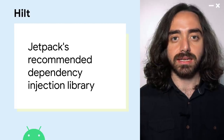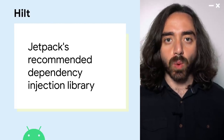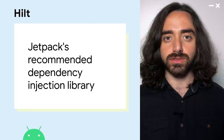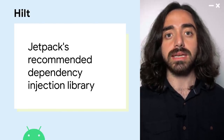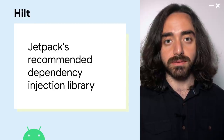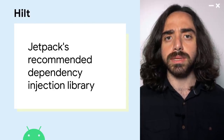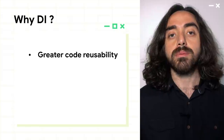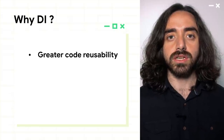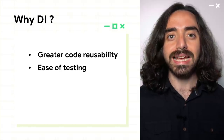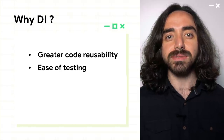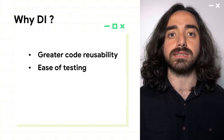First up, Hilt. Hilt is Jetpack's recommended dependency injection library. Dependency injection is a technique widely used in programming and well-suited to Android development, where dependencies are provided to a class instead of the class itself — this helps reduce coupling in your codebase. By using dependency injection, you get better code reusability due to decoupling between components, and testing becomes easier since your class dependencies are well defined.